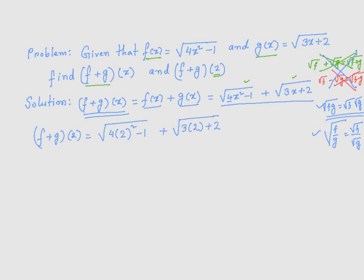If I simplify it further, I get square root of 4 times 2² is 4, minus 1, plus square root of 3 times 2 is 6, plus 2 is going to be √(16-1). 4 times 4 is 16, plus √8. 6 plus 2 is 8. But √(16-1) is √15, plus square root of, then this term, which is 8.